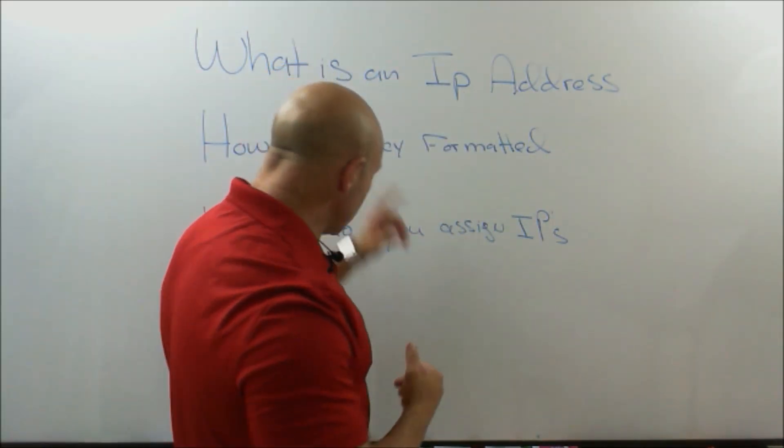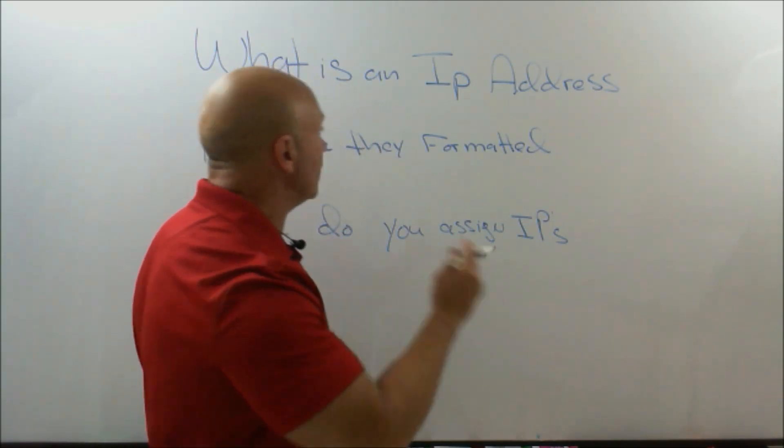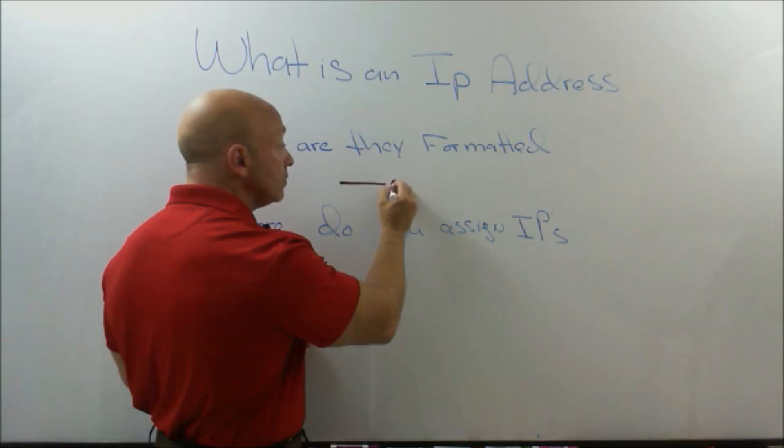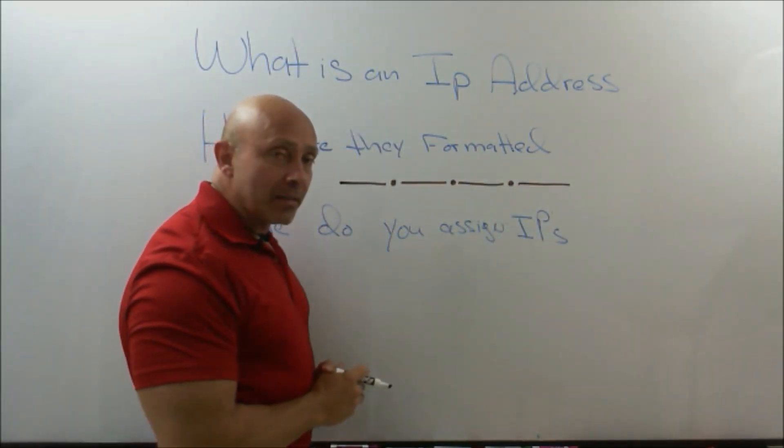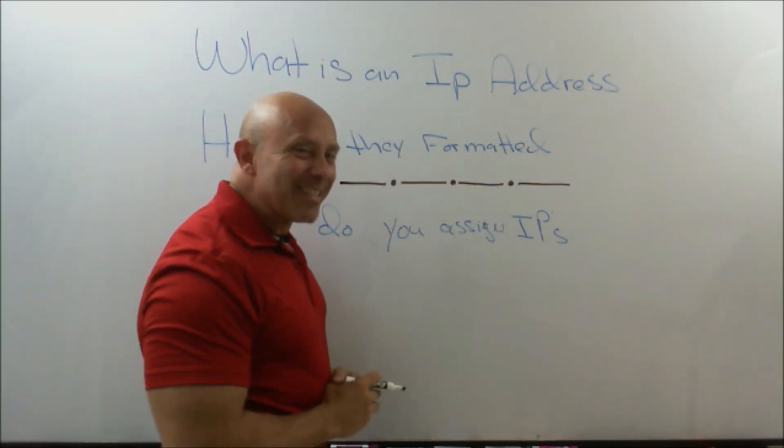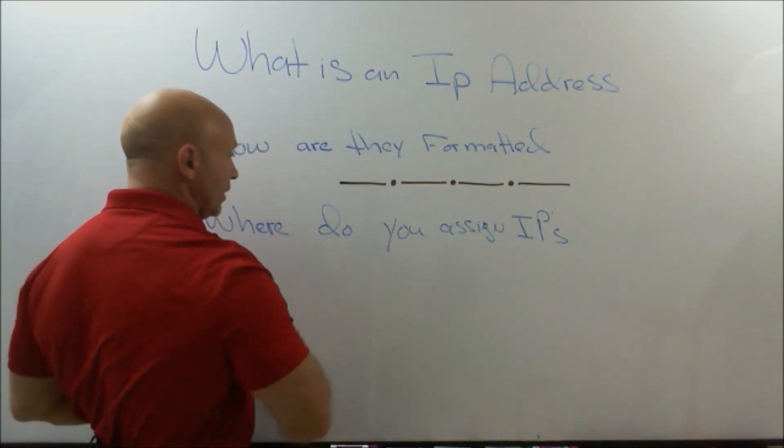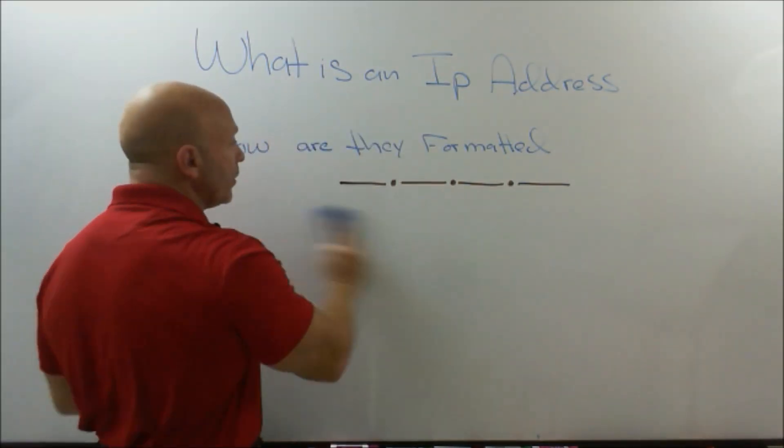So let's take a look because I'm going to show how they're formatted. So let's use brown here. An IP address is four different octets separated by a decimal. Let me erase this down here because now I'm going to tell you where do we assign them. But this is how they're formatted.